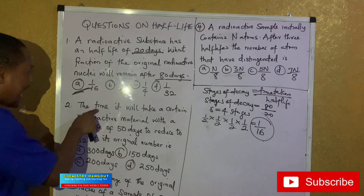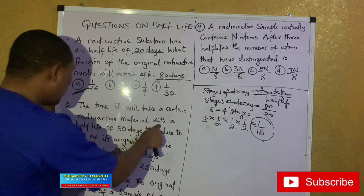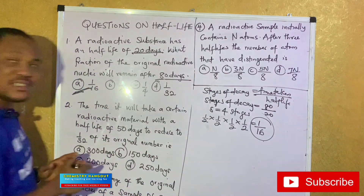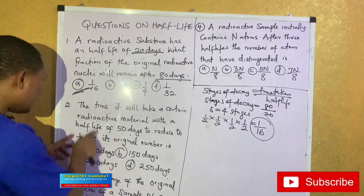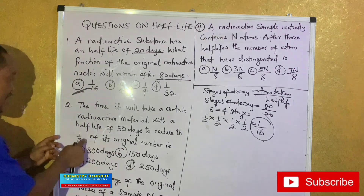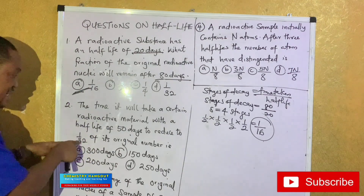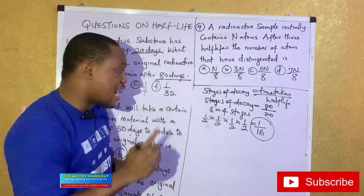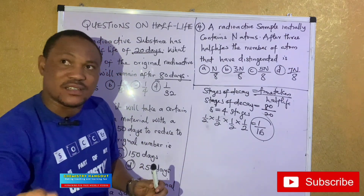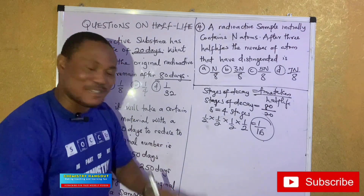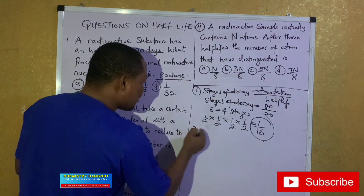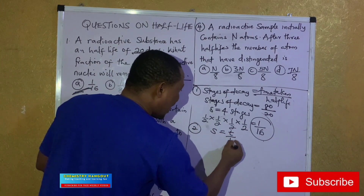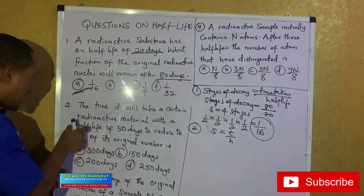Number 2: Find the time it will take a radioactive material with a half-life of 50 days to reduce to 1/32 of its original number. They are now telling us the amount remaining is 1/32 and asking for the time. I need to know how many stages of decay produce 1/32. These questions are simple — you just have to be calm.